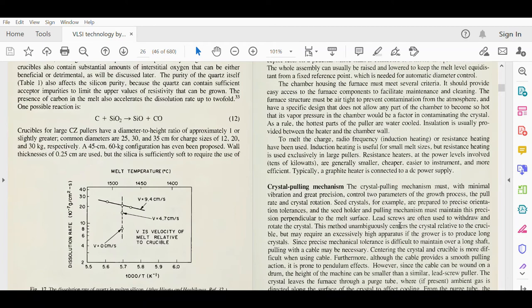But it may require an excessively high apparatus if the grower is to produce long crystals. Since precise mechanical tolerance is difficult to maintain over a long shaft, pulling with a cable may be necessary. Centering the crystal and crucible is more difficult when using cable. Furthermore, although the cable provides smooth pulling action, it is prone to pendulum effects. However, since the cable can be wound on the drum, the height of the machine can be smaller than a similar lead screw puller. The crystal leaves the furnace through a large purge tube where ambient gas is directed to affect cooling.